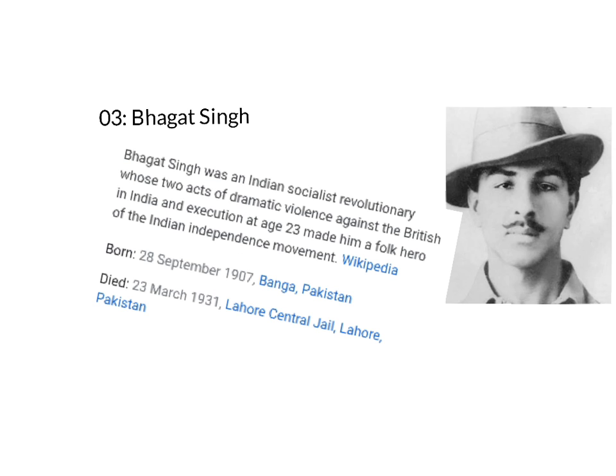The third one is Bhagat Singh. Bhagat Singh was an Indian socialist revolutionary whose two acts of dramatic violence against the British in India and his execution at the age of 23 made him a folk hero of the Indian independence movement. He was born on 28th September 1907 in Banga, Pakistan, and died on 23rd March 1931 in Lahore Central Jail, Pakistan.